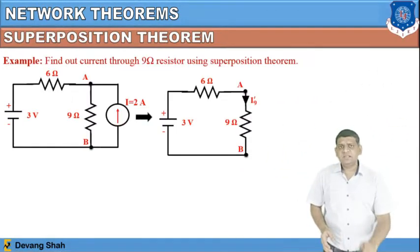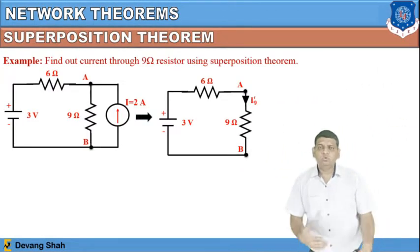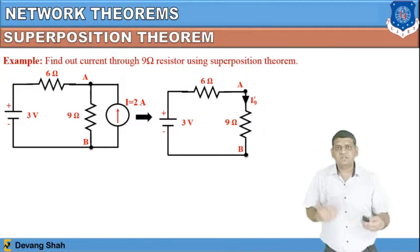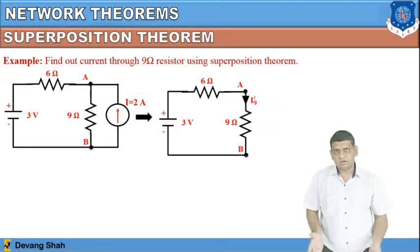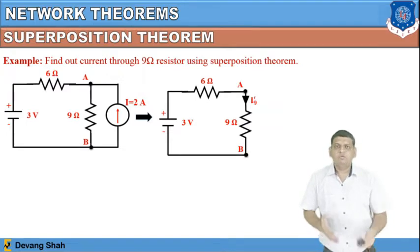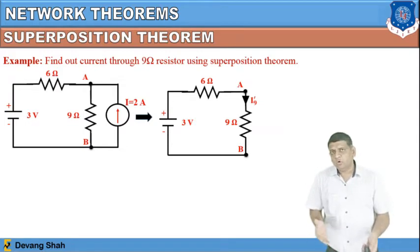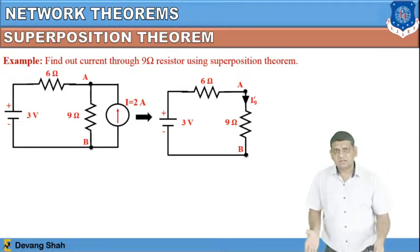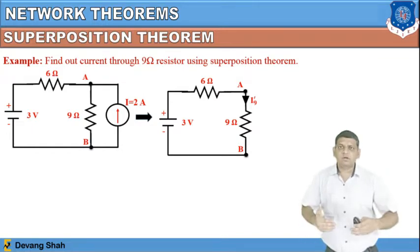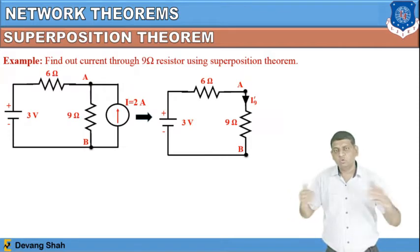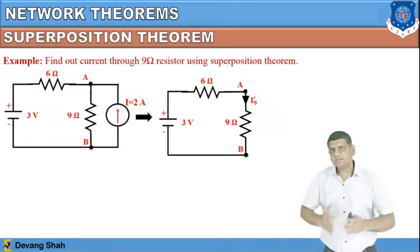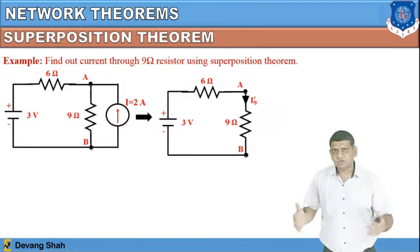Let's discuss an example. There are two sources available — one is a voltage source and another is a current source — with two resistances connected. Your job is to find the voltage drop across the 9 ohm resistance or the current passing through the 9 ohm resistance. To find the effects of these two separate sources, you take one at a time. Let's first consider the voltage source.